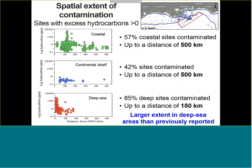Looking only at sites that showed contamination — those with excess hydrocarbons — we found a large spatial extent across all areas of the Gulf. In the coastal area, 57% of sampled sites showed contamination up to 100 kilometers from the Deepwater Horizon site. On the continental shelf, almost 50% of sites showed contamination up to 500 kilometers away. In the deep sea, 85% of sites were contaminated up to 180 kilometers from the spill site — representing a larger extent of contamination than previously reported, especially in the deep sea.